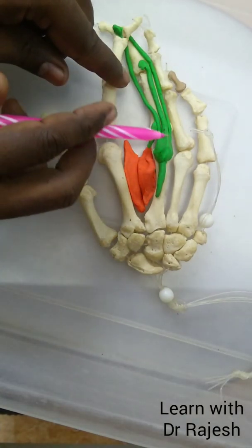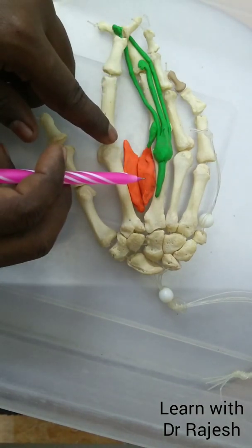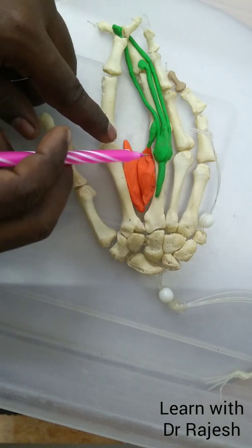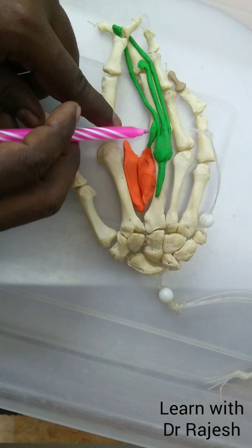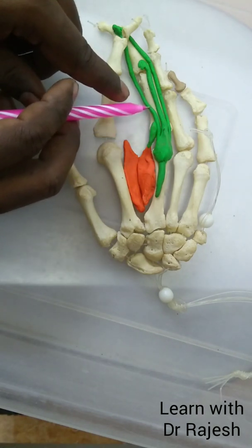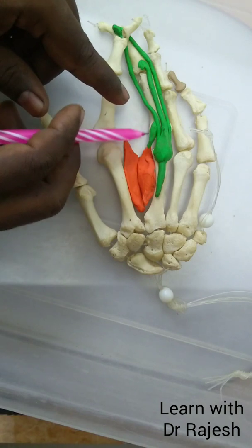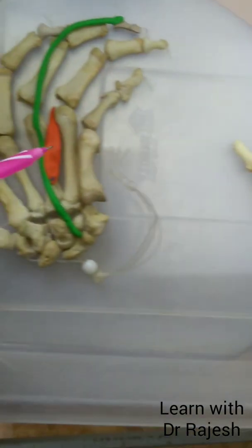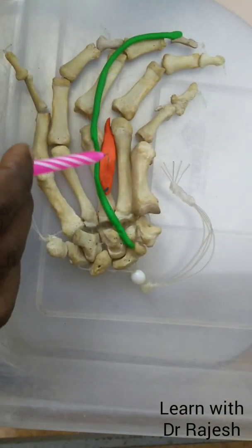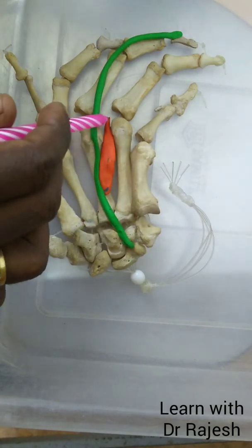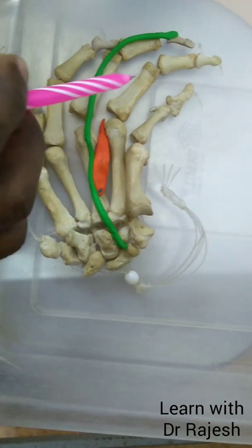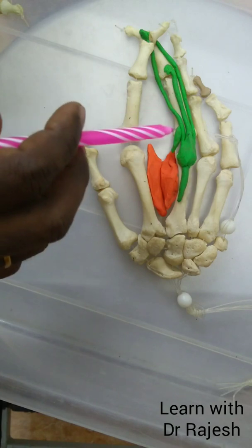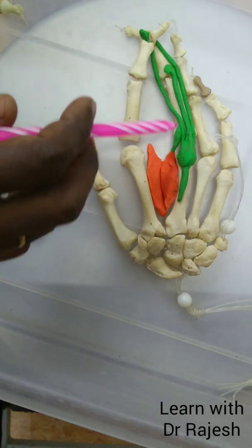These lateral slips are strengthened and thickened by the insertion of the dorsal and palmar interossei. You can see the tendon of the dorsal interossei getting inserted to the lateral slip. Similarly, the palmar interossei also come and get inserted into the lateral slip. From the ventral side, the tendon of the lumbricals goes dorsally and gets inserted to the lateral aspect of these lateral slips, to strengthen the lateral slip.